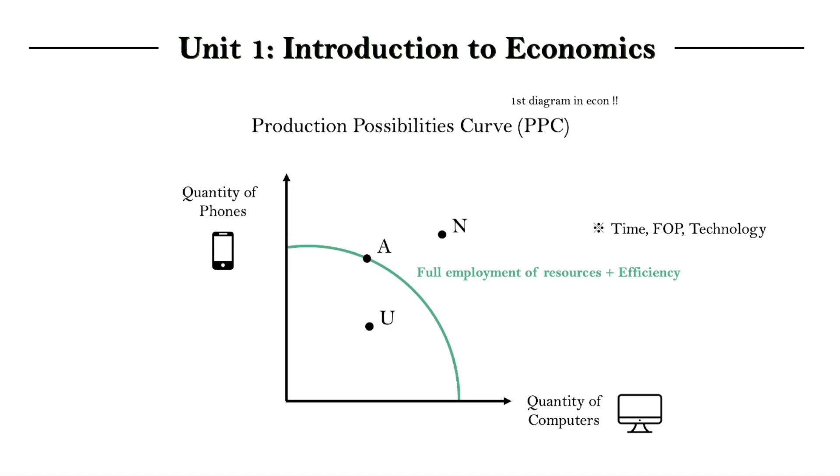And that would be point U. Remember that the name of the curve is Production Possibilities Curve. So the curve shows potential output, how much we could possibly produce at max if we were efficient with all the resources we have. So it is possible to be inside the curve producing less than what is technically possible with unemployment of resources or inefficiencies.